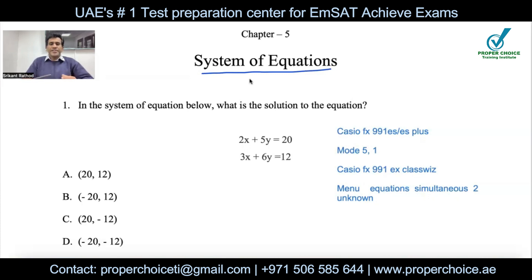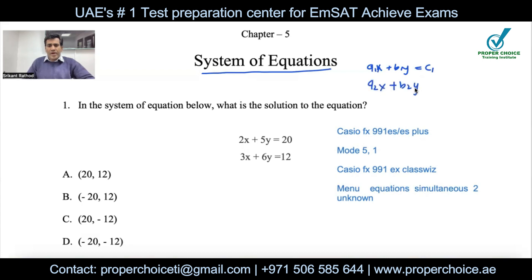System of equations, also called simultaneous equations — in general, two or more equations together we call a system of equations. Those may have two unknowns or three unknowns. Generally we write the system of equations as: a₁x + b₁y = c₁ and a₂x + b₂y = c₂, where a₁, b₁, c₁ and a₂, b₂, c₂ are just constants.